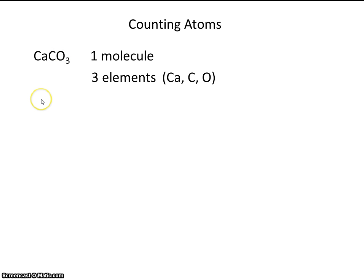Well, how many atoms are there in one molecule of calcium carbonate? Let's see. There's one calcium, one carbon, and three oxygens. So that's a total of five atoms. One calcium, one carbon, and three oxygens.